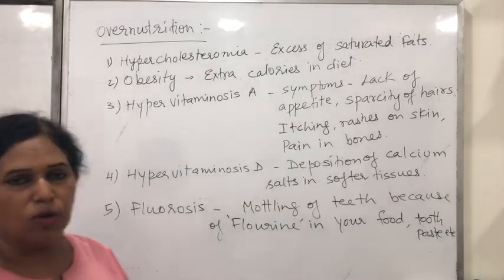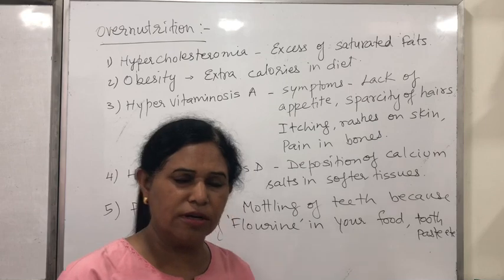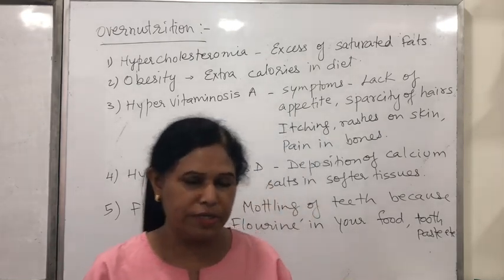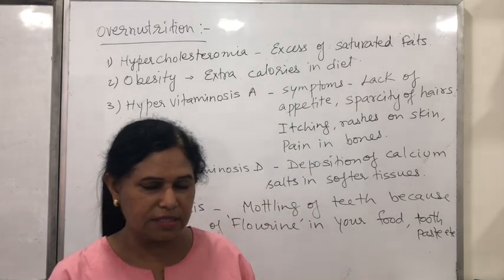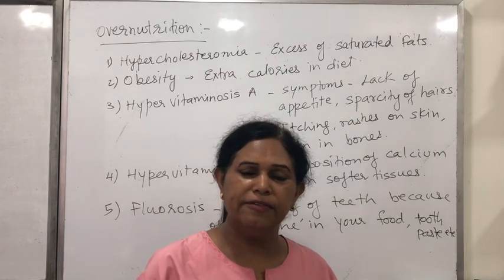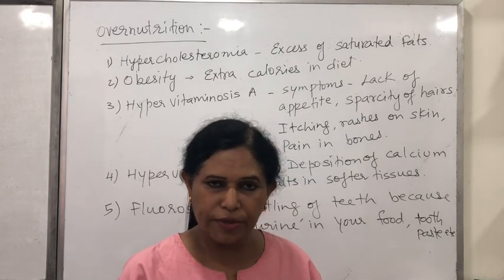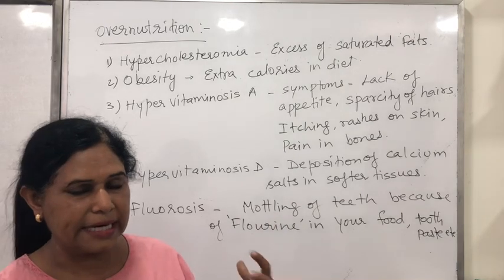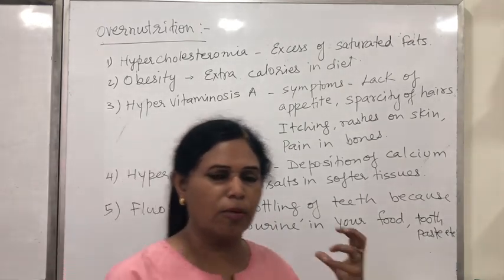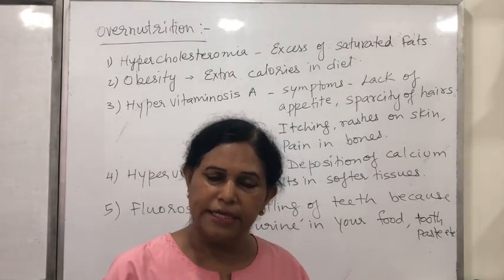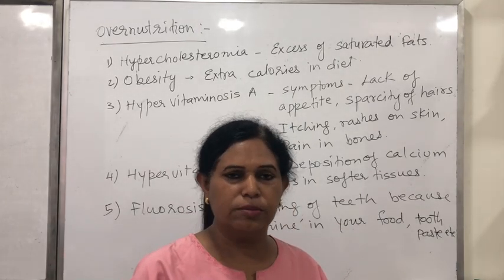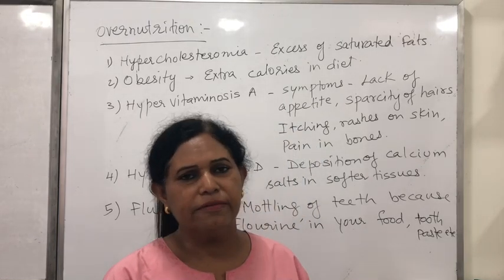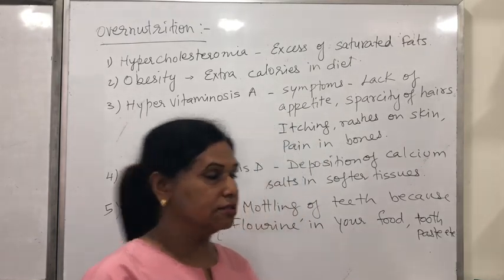Then there is another problem called obesity. Obesity means your body mass index will be more than 25. If the BMI goes beyond 25, that is obesity. This leads to the problem where adipose tissue is deposited all over the body and may adversely affect the functioning of organs.